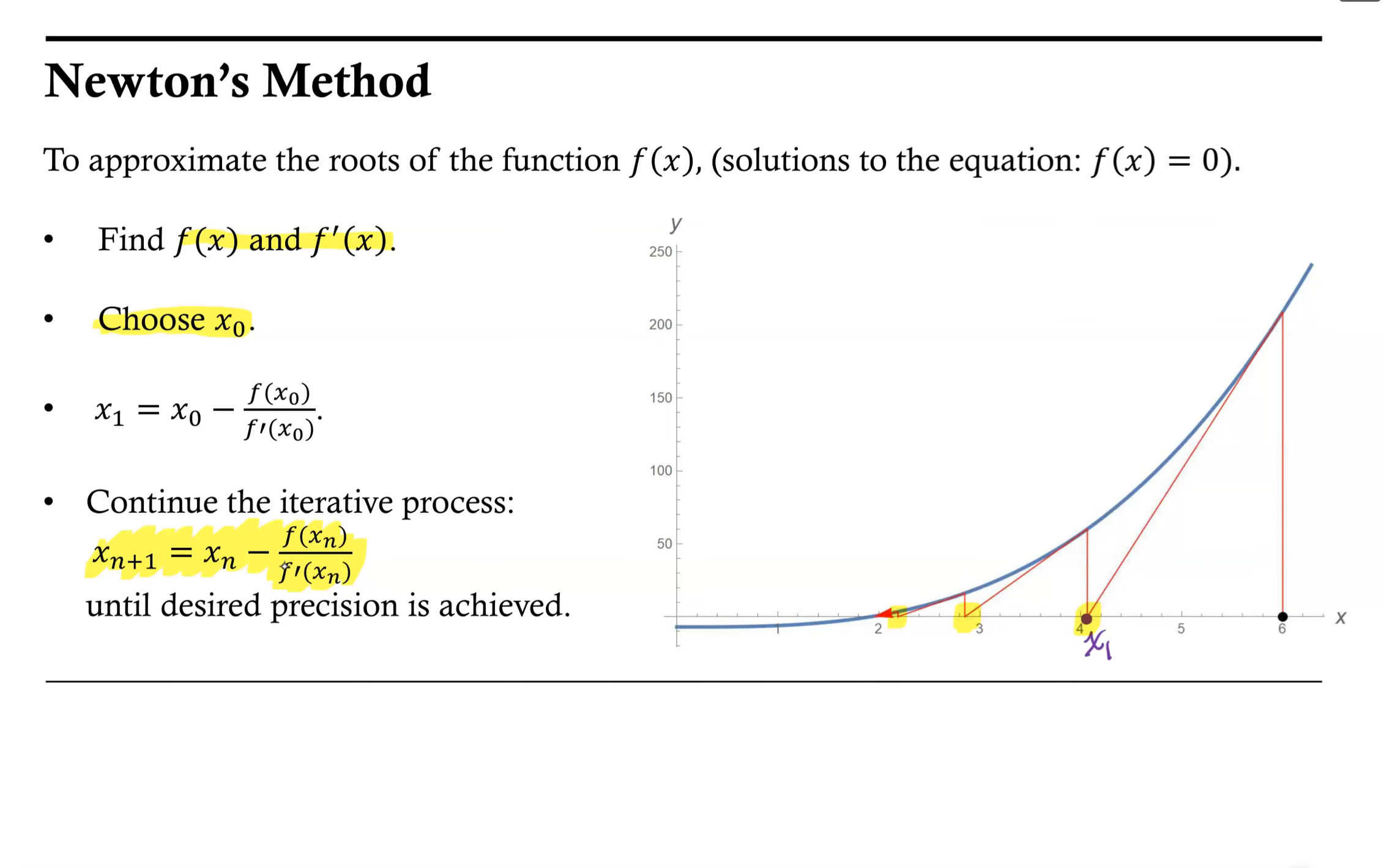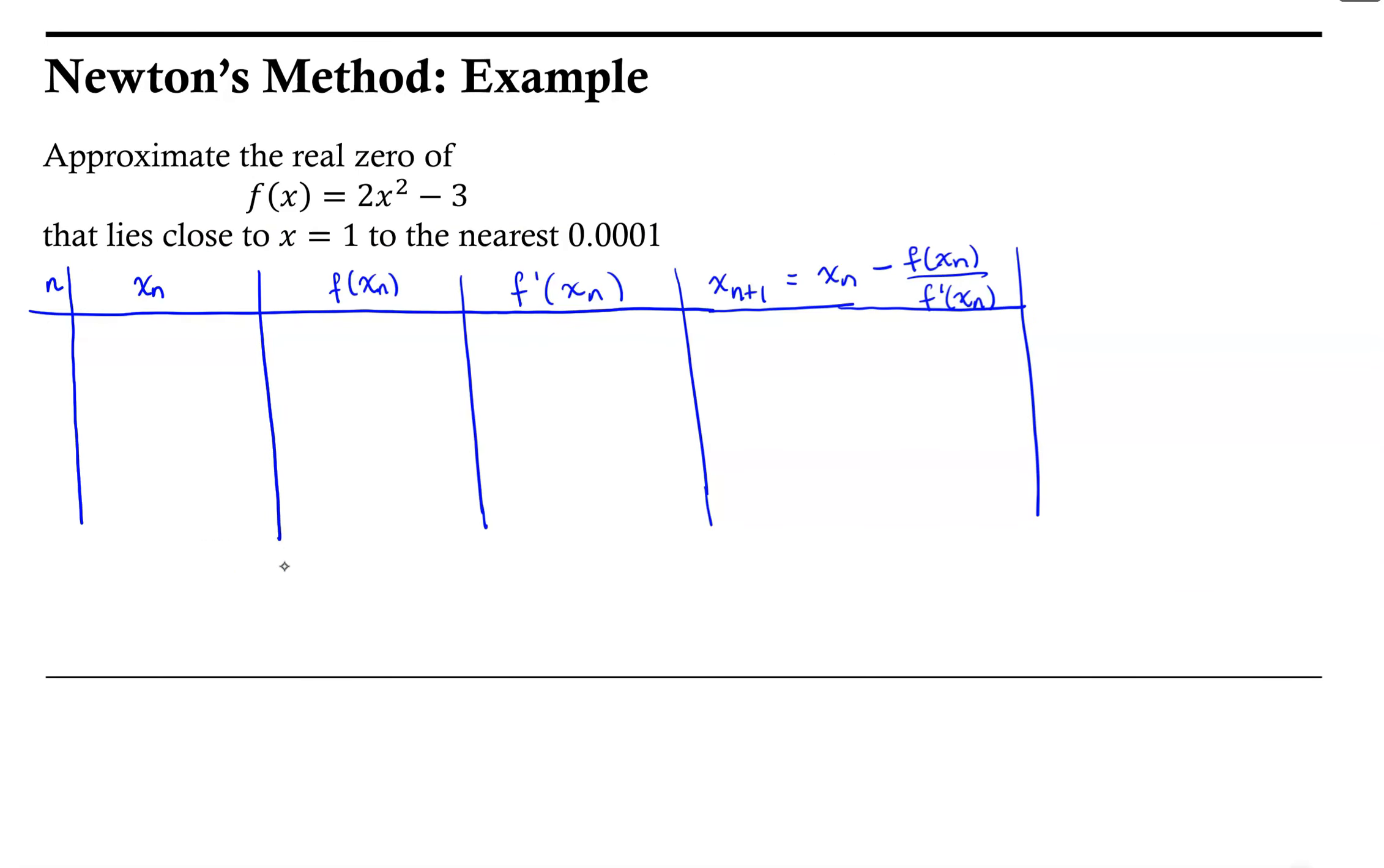So let's look at an example. We're going to use a table to help us organize the information and keep track when we are close enough to the real zero of this function. In the first column, I'm going to keep track of the iteration. In the second column will be our approximation to the real zero. In the third column will be the function evaluated at that approximation, as well as the fourth column being the derivative at that approximation.